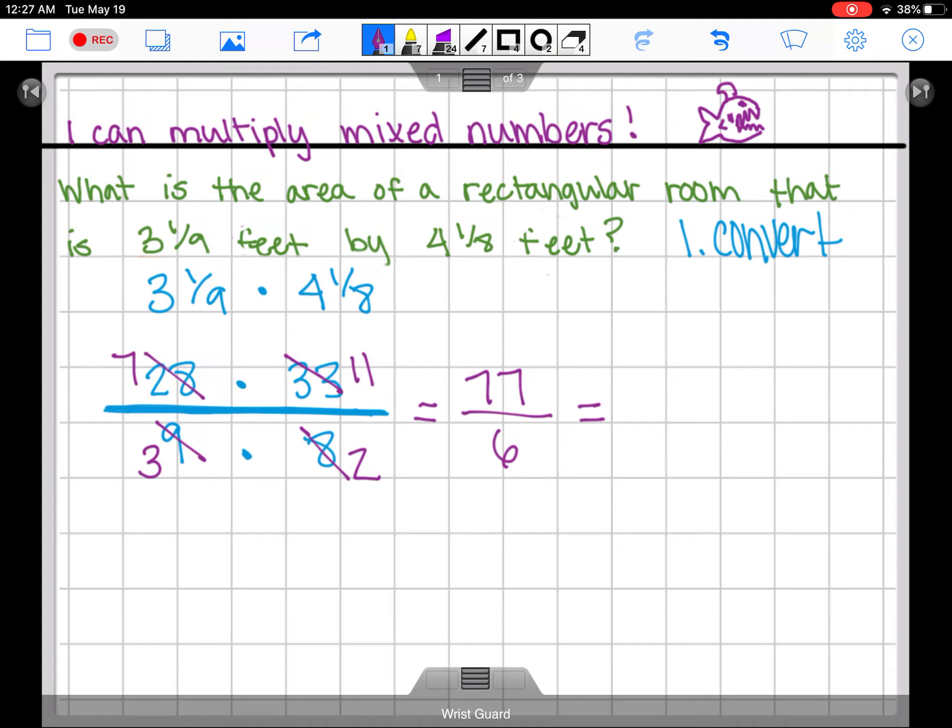We need to simplify this into a mixed number. That means that we are going to figure out 6 can go into 77. You might know this one in your head from your math facts, it's gonna be 12 times. 12 times 6 is 72, and you could be writing this out if you wanted like this is gonna be 12, it's gonna be 72, subtract, you're gonna have 5 remaining.